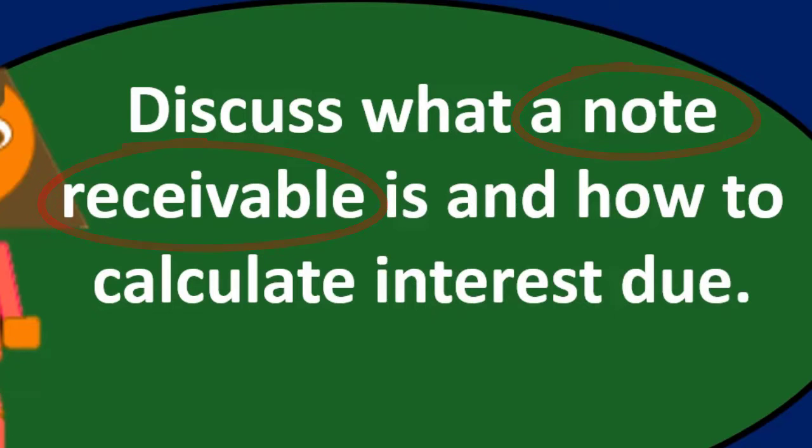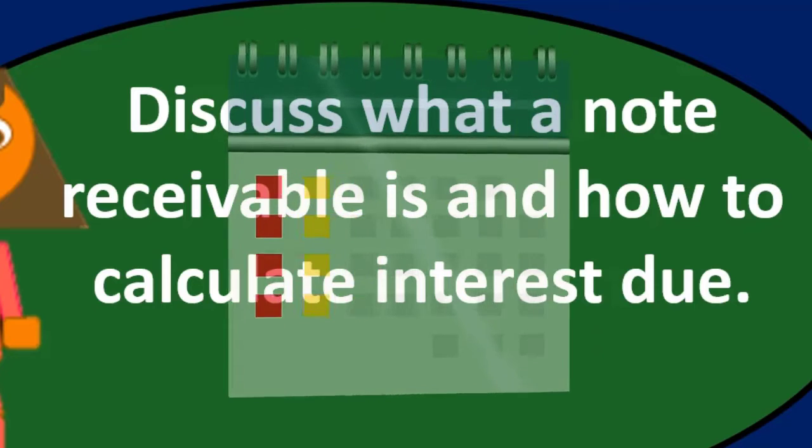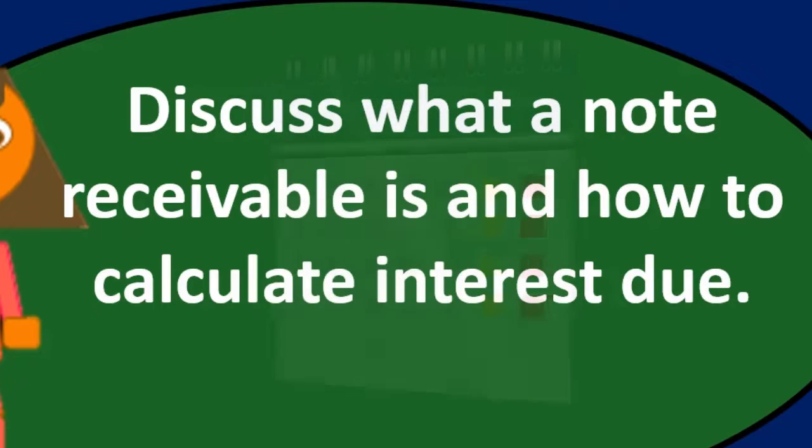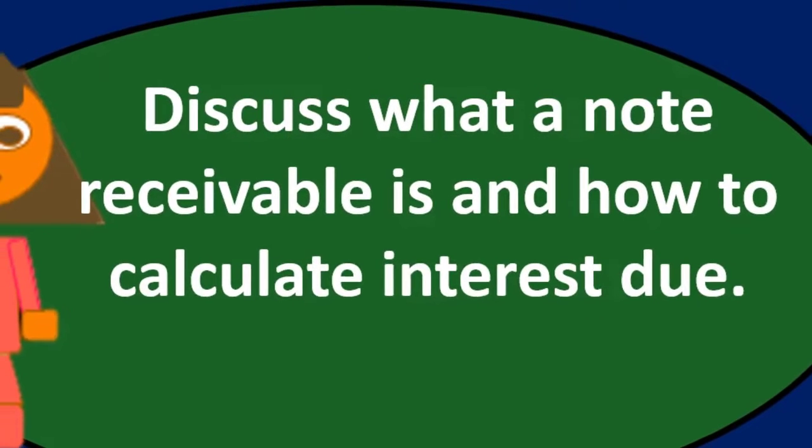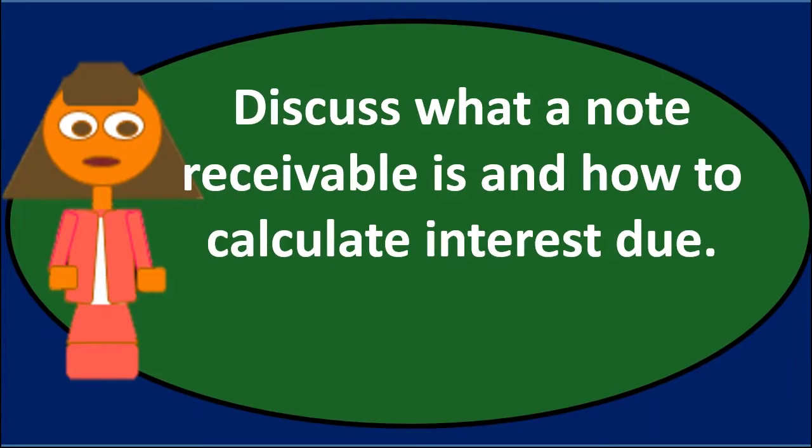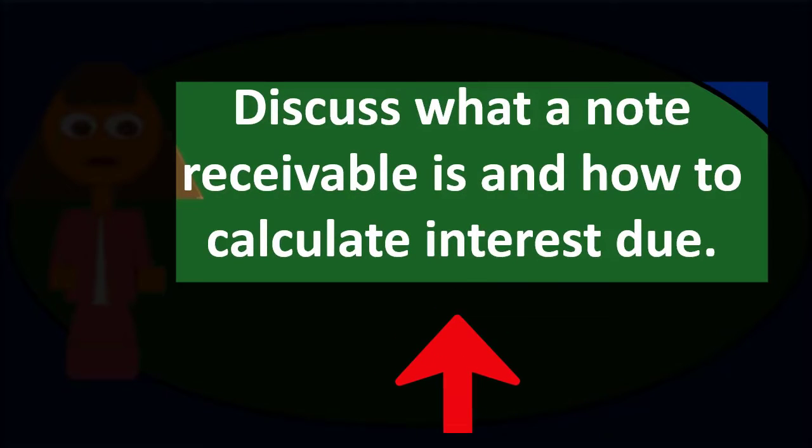Because the note receivable is longer in due dates, more than 30 days typically than accounts receivable, we might tend to think that it should be a long-term asset or not a current asset, and that's not necessarily the case. If it's over 30 days, it still might be a current asset, but something that's not going to be an accounts receivable.